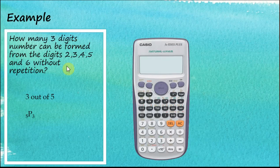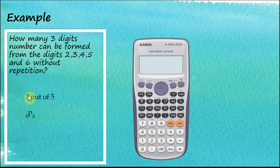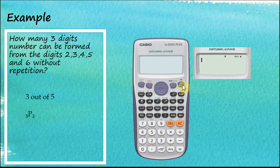Now let's look at this example: how many three-digit numbers can be formed from the digits 2, 3, 4, 5, and 6 without repetitions? We have five numbers in total and we want to select three from them. This is a permutation problem: 5P3.